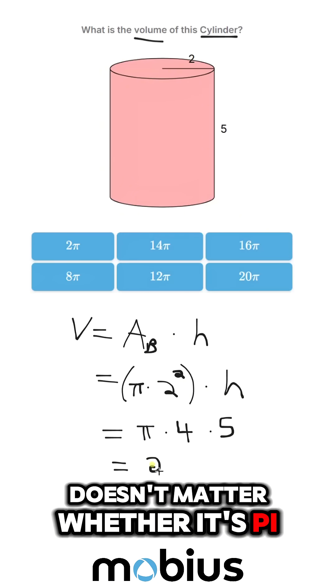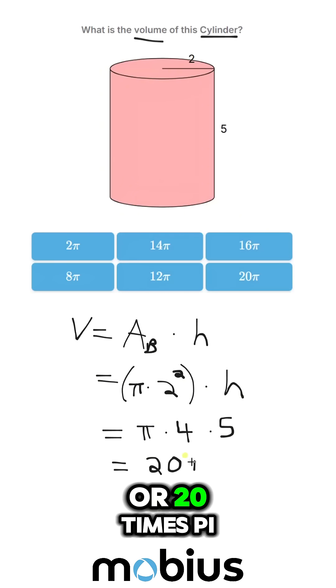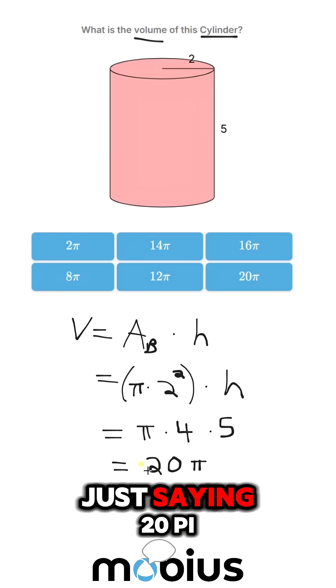It doesn't matter whether it's pi times 20 or 20 times pi. We can simplify to just saying 20 pi.